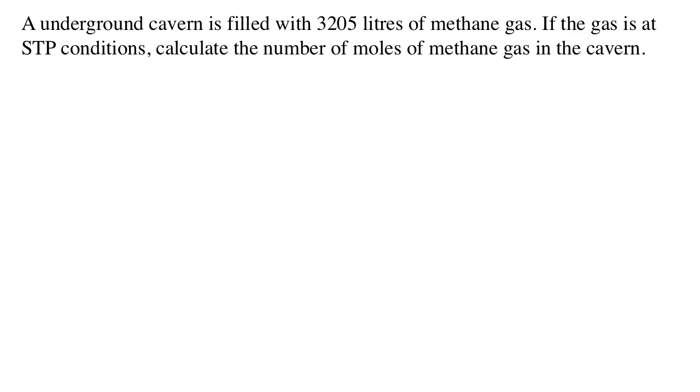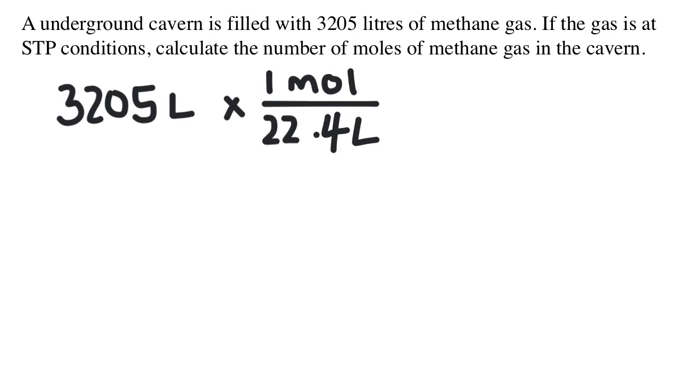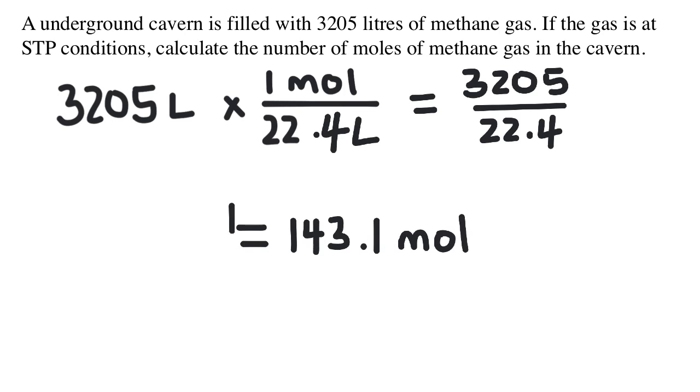So the math becomes 3,205 liters times one mole over 22.4 liters. Multiplying one over something is the same as just dividing by the number on the bottom. So really we just have 3,205 divided by 22.4. When we put this into our calculator, we get 143 moles.